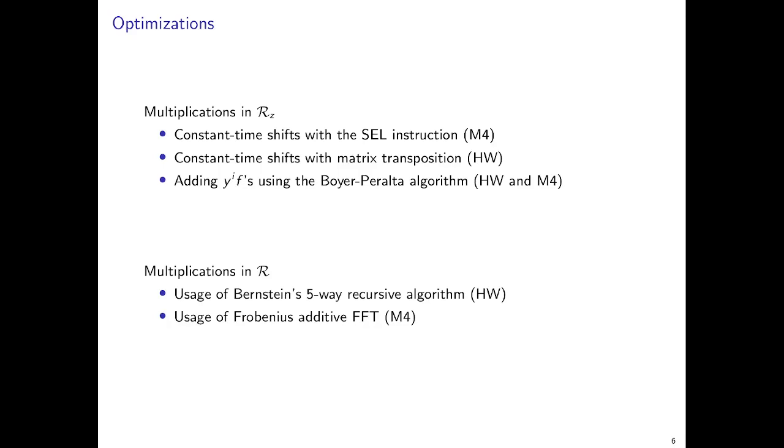So here are our optimizations for multiplications in RZ. On M4, we use the SEL instruction on M4 to perform constant-time logical shifts. And on Haswell, we make use of matrix transposition to perform constant-time logical shifts. And on both Haswell and M4, when we want to add different Y^(2^i)*F's, we use an algorithm described by Boyar and Peralta.